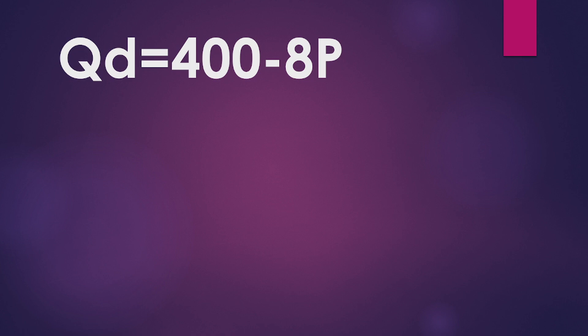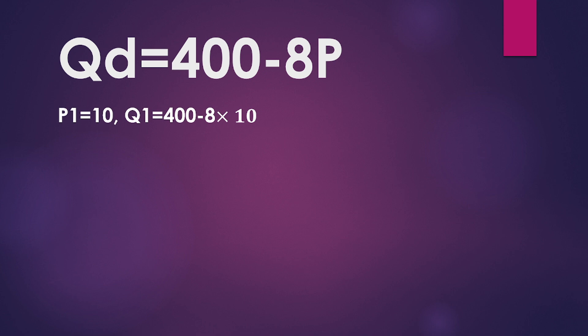Given the demand function, we will substitute the first and second price into this demand function and calculate quantity demanded. First price P1 equal to 10, substitute the value in the demand function, so first quantity Q1 equal to 400 minus 8 multiplied by 10 equal to 400 minus 80, equal to 320. When price is 10, quantity demanded is 320.